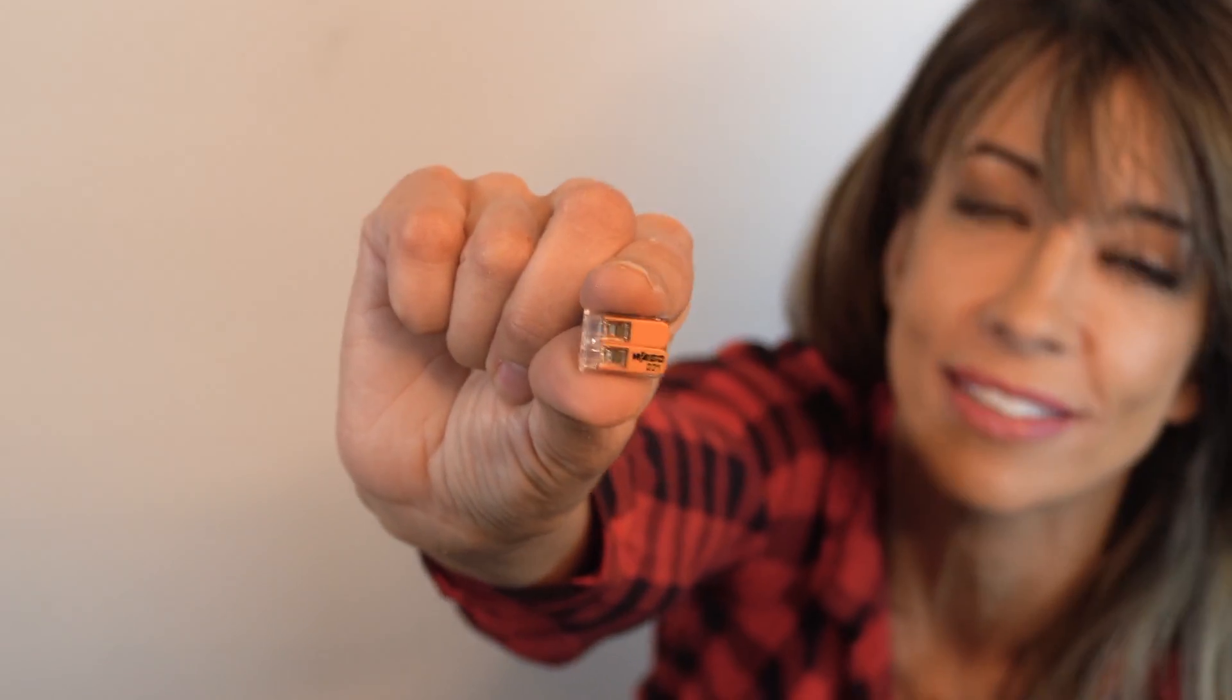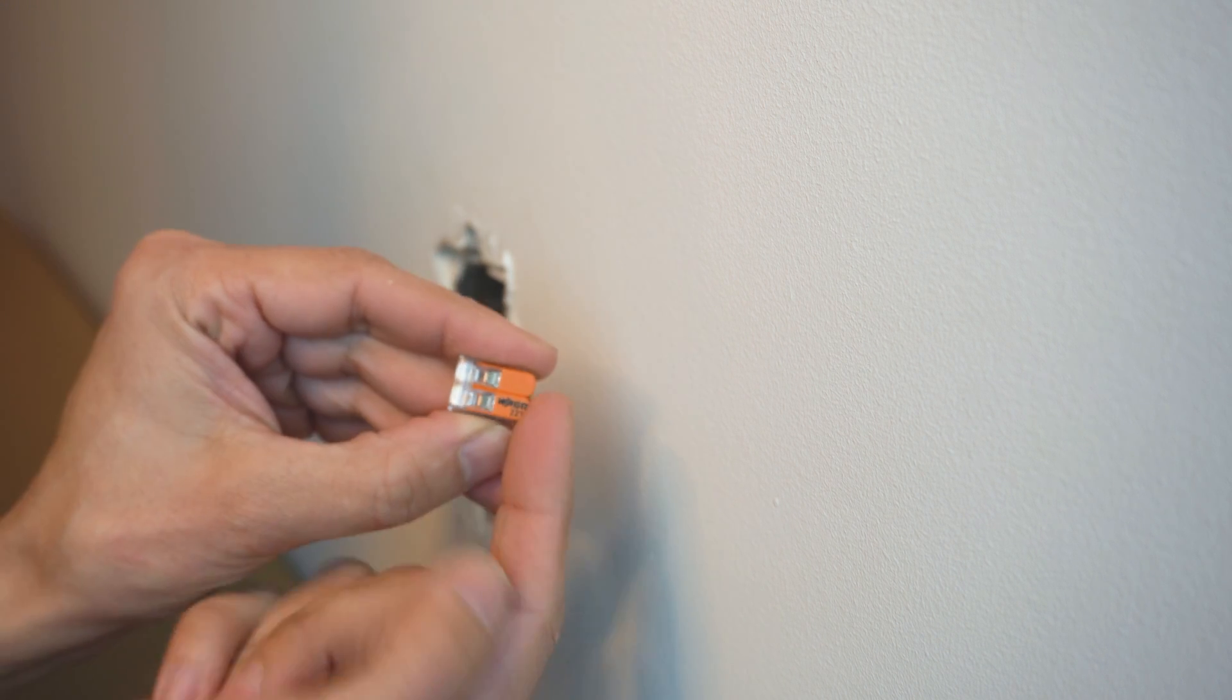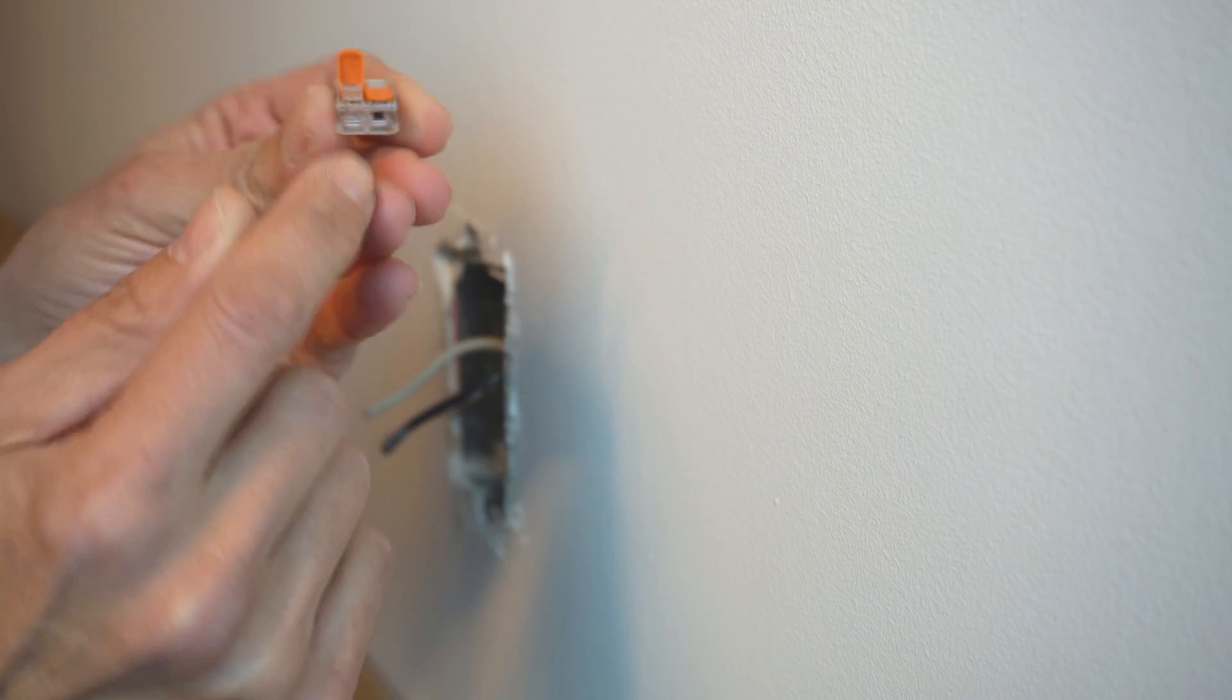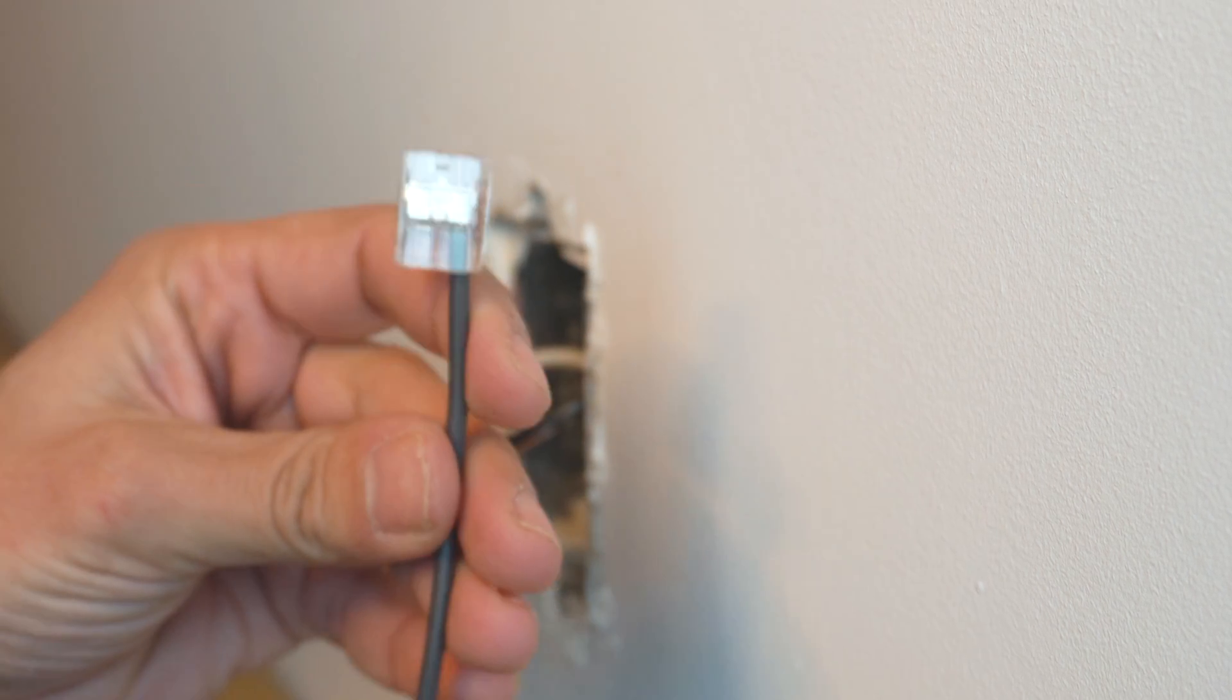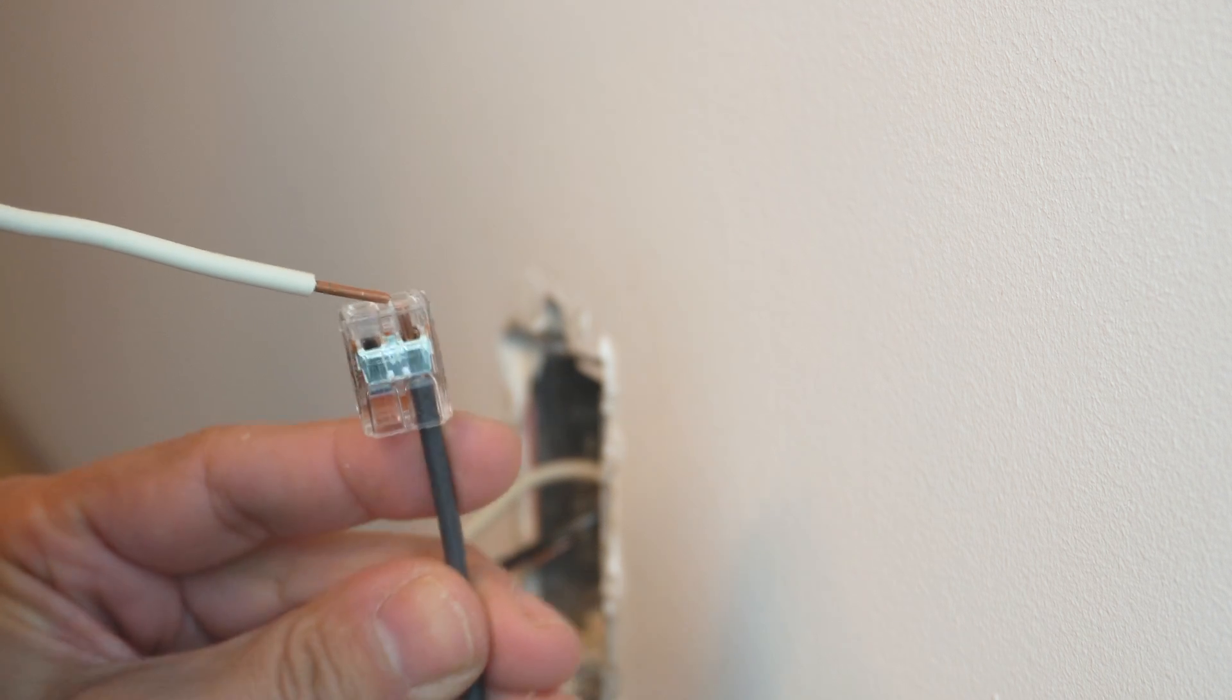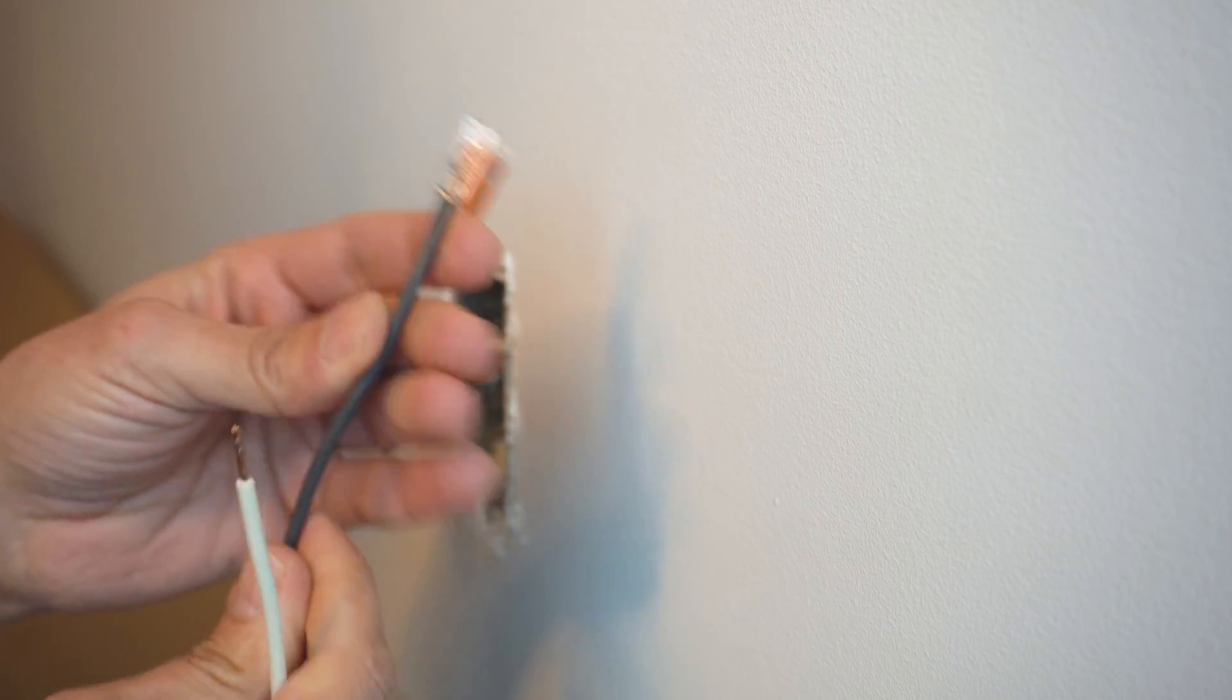And that takes us to method number two, which is the WAGO 221 lever connector. Now, by far, the most common way to connect your pigtails is to use your WAGO 221 lever connectors. How you use them is you open the lever like this, and it's going to open the port. You're going to take your wire and insert it. Now, there is a trick to using these. You're going to close the lever and take a look right here at the top of the lever connector. You're going to see that the housing is clear. And that is so you can visually confirm that your wire has gone all the way to the top so that you have made a safe connection on your pigtail.